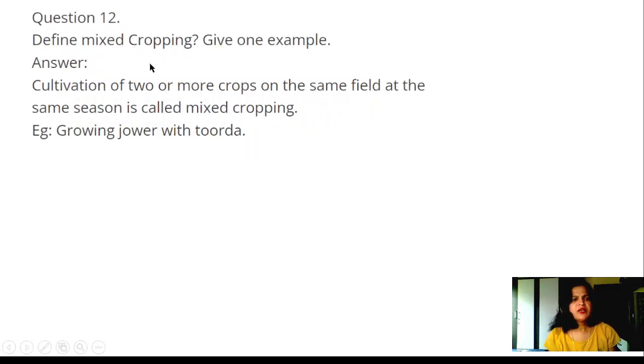Question 12: Define mixed cropping. Give one example. Answer: Cultivation of two or more crops on the same field at the same season is called mixed cropping. For example, growing jowar with tur dal.